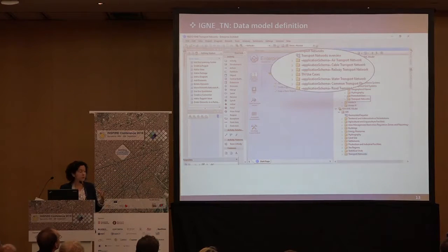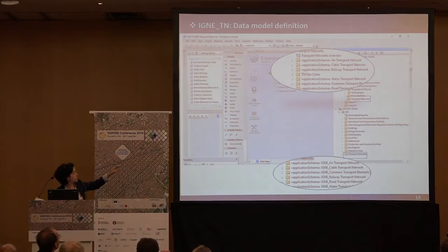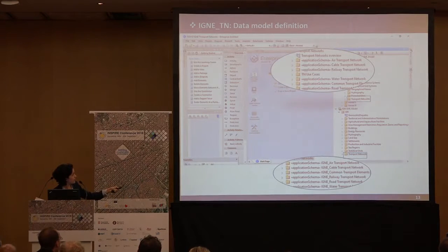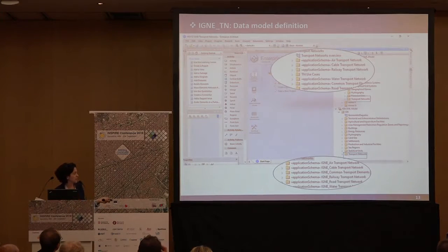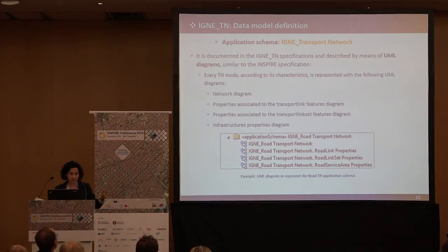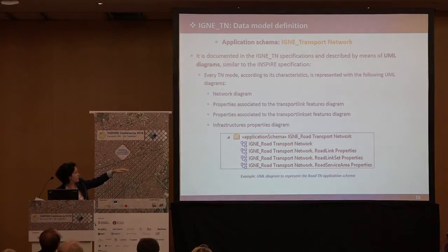We started from this schema and added our local requirements. It implies that we had to extend the model or some values from the code list with some specific changes. We have documented this application schema in specifications and also with UML diagrams in a quite similar way as in INSPIRE specifications. We provide diagrams at network level and also with every property linked to the transport link element or the transport link set features and also the properties associated to the infrastructure. This schema or structure is common for the five transport modes.